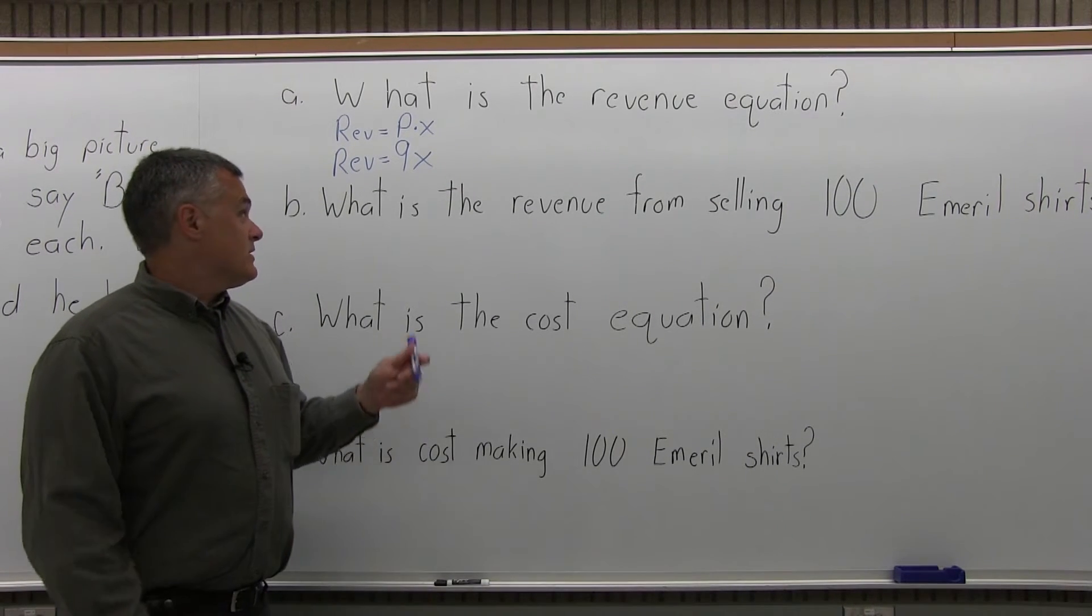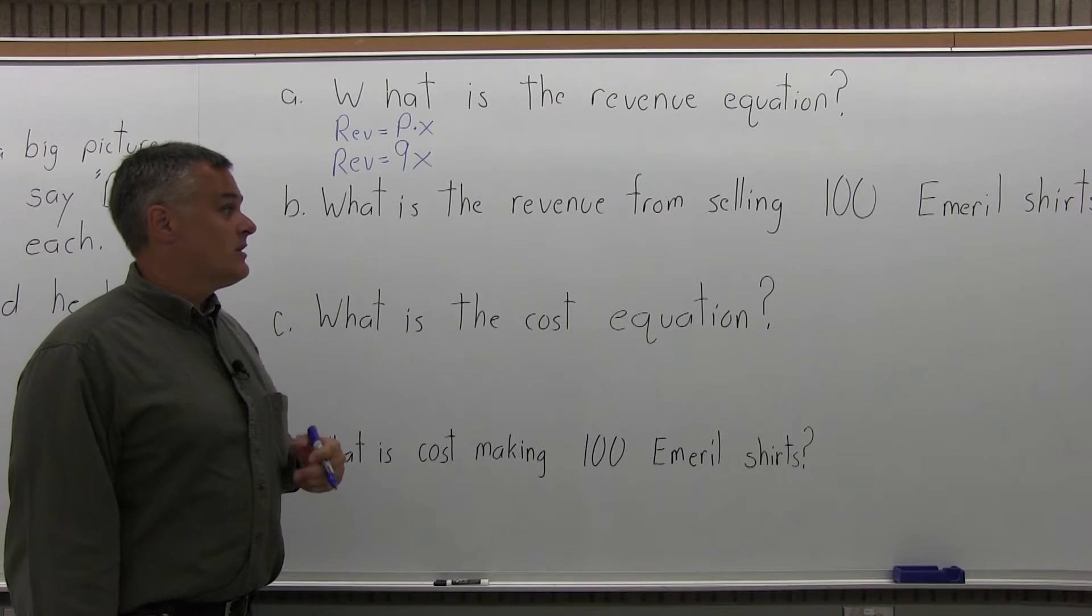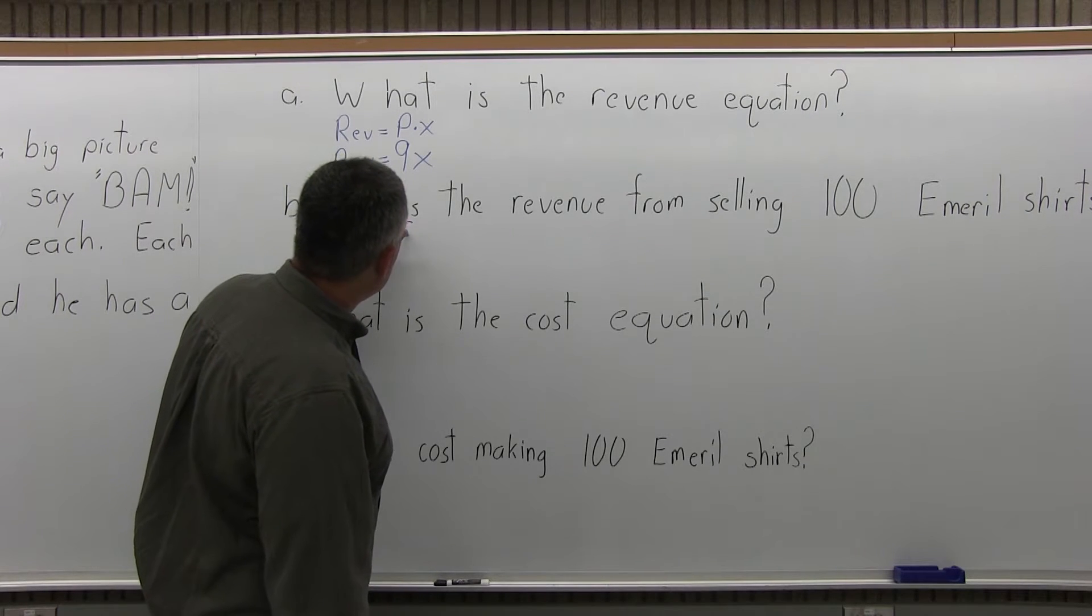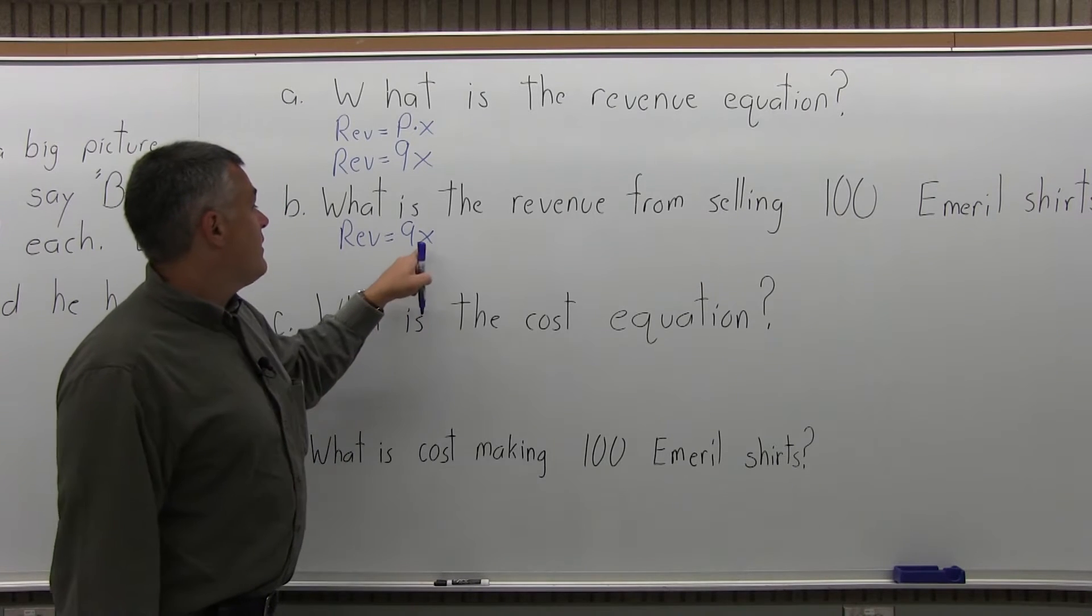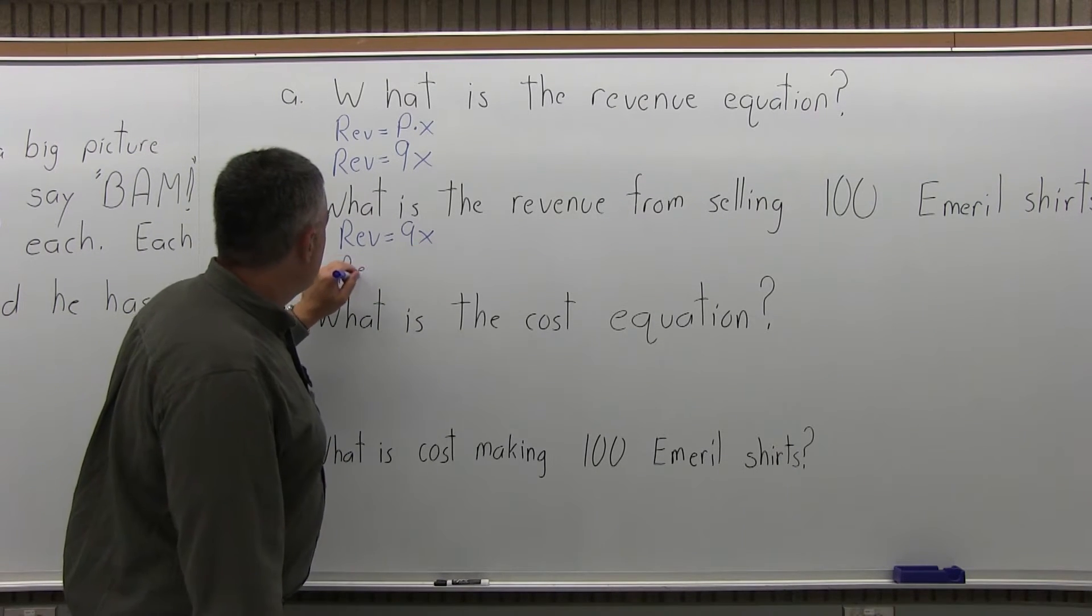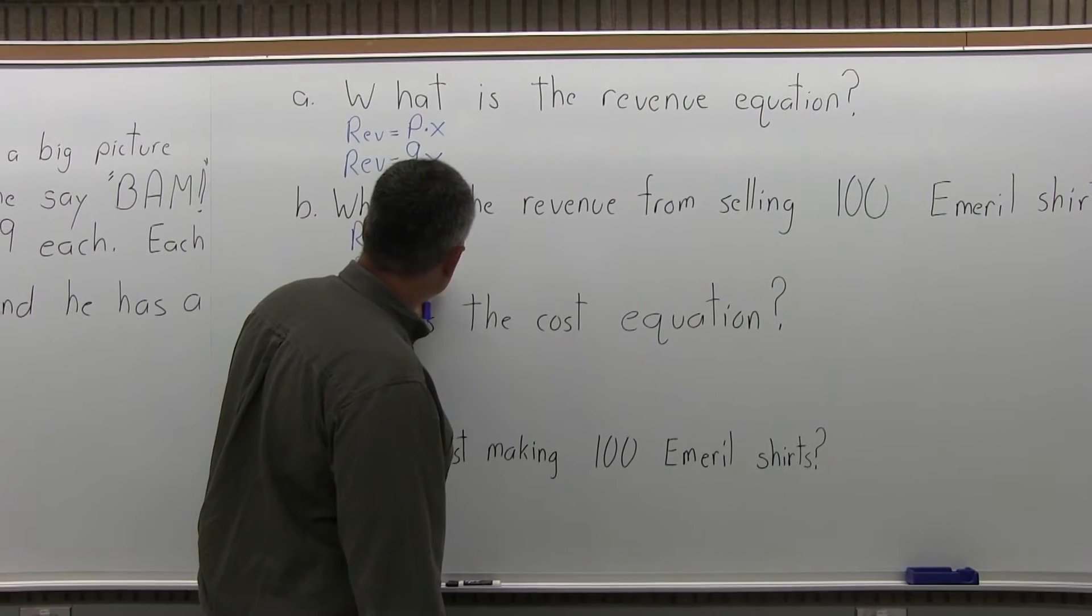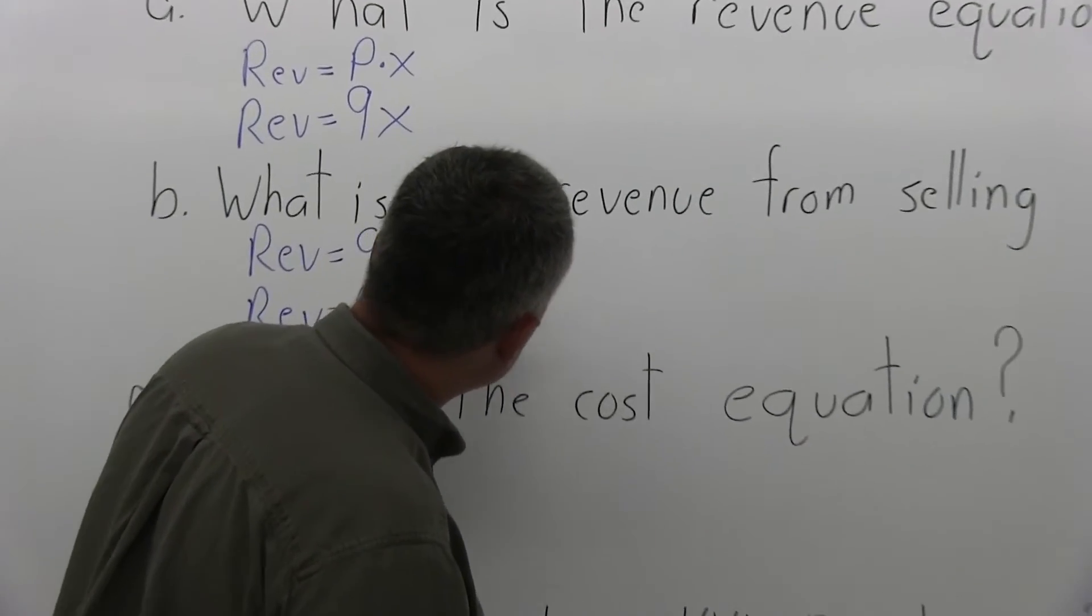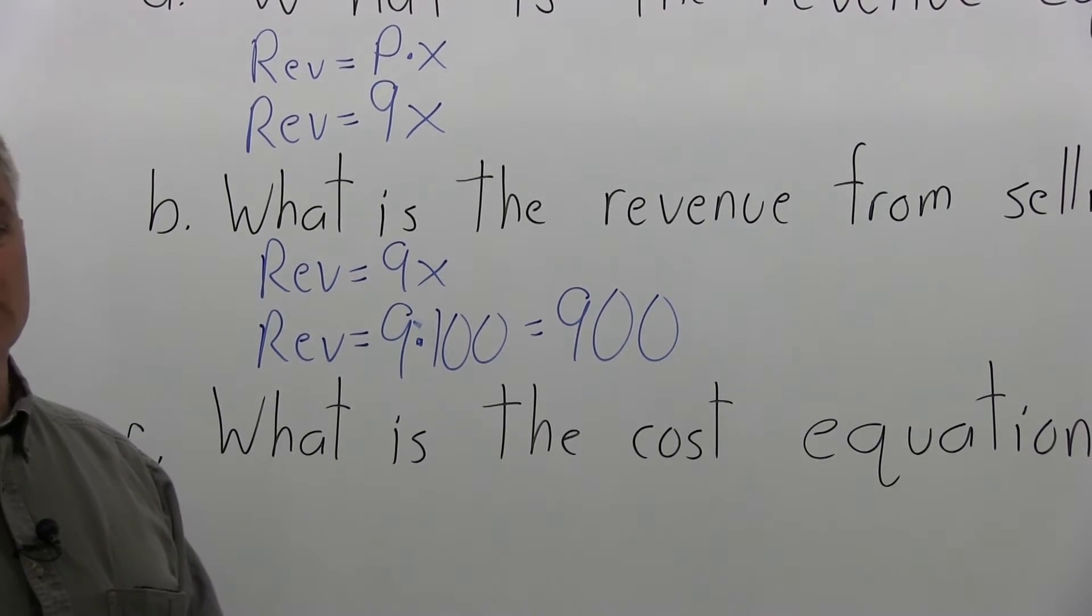And Part B asks you specifically, what is the revenue from selling 100 Emeril shirts? Well, take your revenue equation that we just figured out from Part A, that's 9 times X. And that 100 goes in for X, the number of shirts. So the revenue from selling 100 shirts is $9 for each shirt times X, which has a value of 100 in this part. So you get a revenue of $900 for selling 100 shirts.